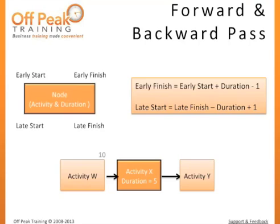While most modern scheduling tools will automate the calculation of critical path, it is useful to understand how the technique works so that you can troubleshoot conflicts and rescheduling needs. We will explore this method using a schedule network diagram. We will look at each activity or node to determine four key pieces of information needed to calculate the critical path using two steps: a forward pass and a backward pass. Our first step, the forward pass, will be used to find the early start and early finish for each node on the network diagram.